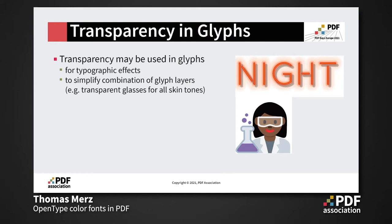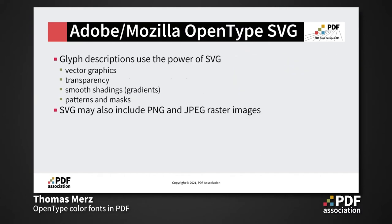Talking about color is also related to transparency — in color fonts you can also use transparency, which can be used for typographic effects like in the top example, or it could be used to simplify combinations of glyphs. For example, the scientist in the example has transparent glasses because otherwise her eyes wouldn't be visible.